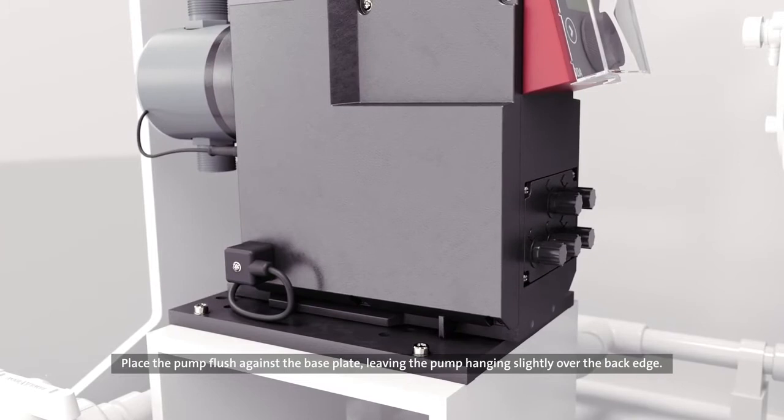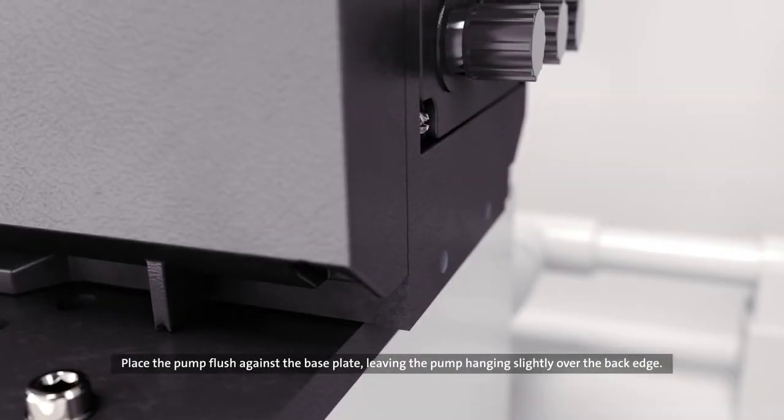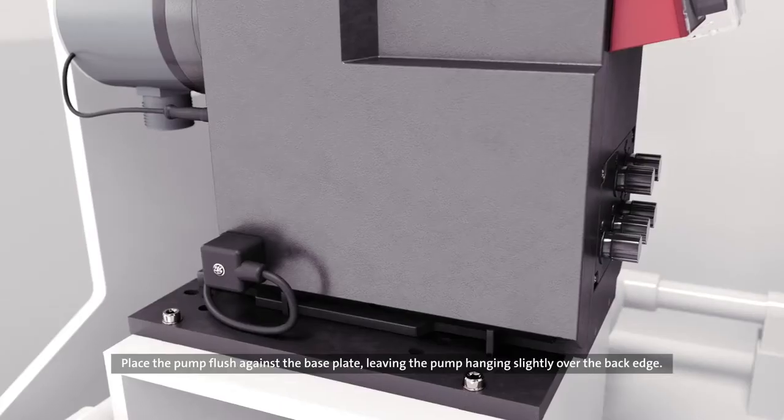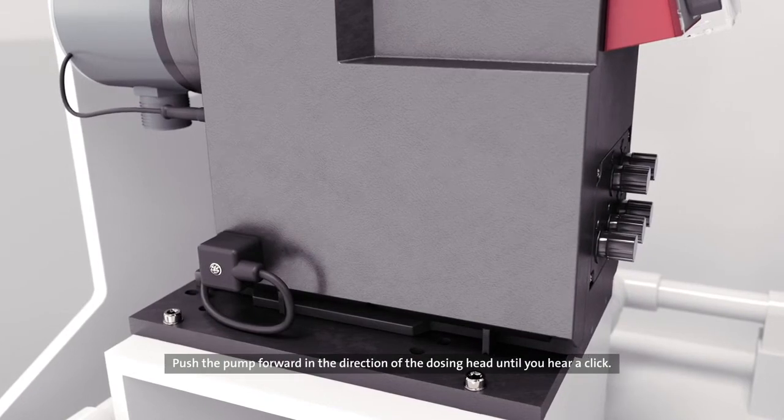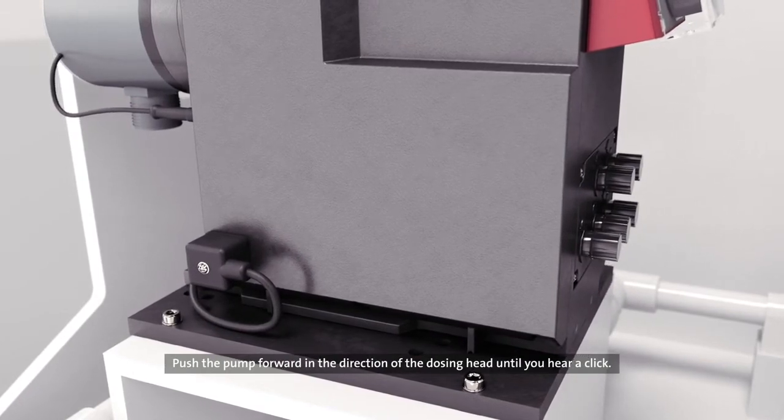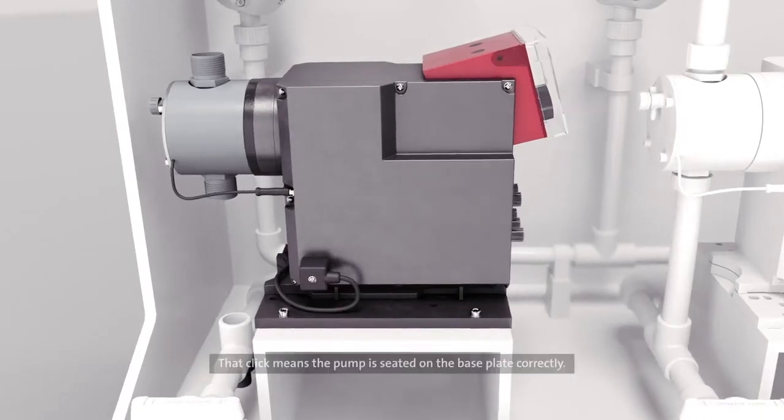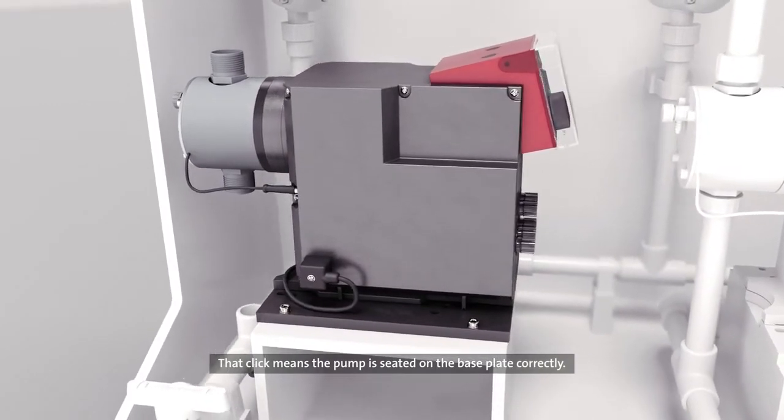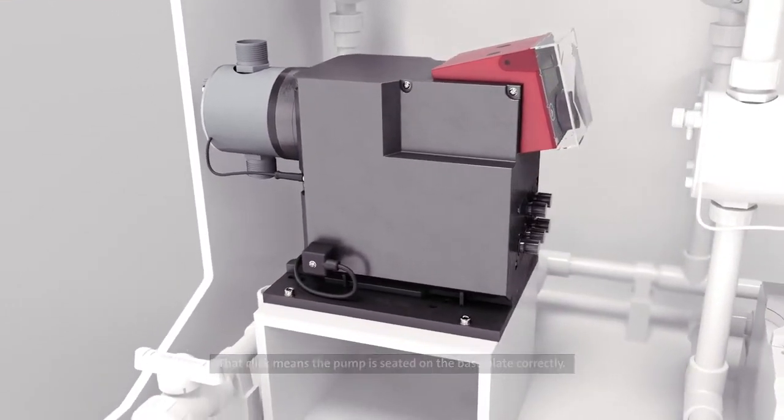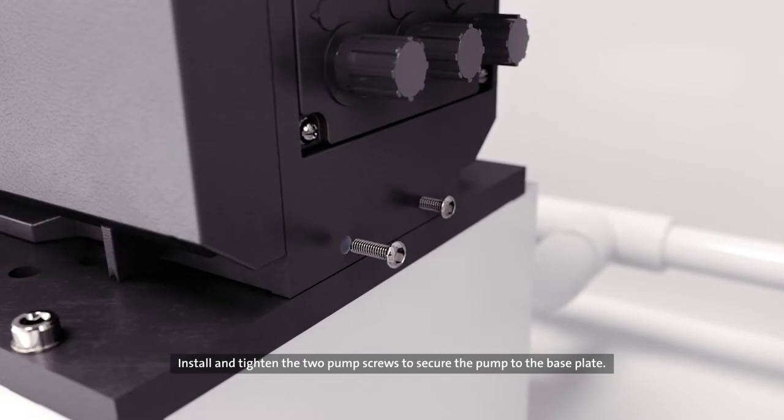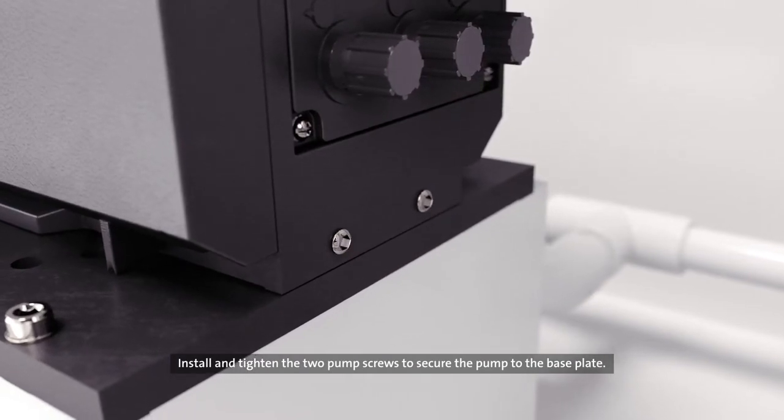Place the pump flush against the base plate, leaving the pump hanging slightly over the back edge. Push the pump forward in the direction of the dosing head until you hear a click. That click means the pump is seated on the base plate correctly. Install and tighten the two pump screws to secure the pump to the base plate.